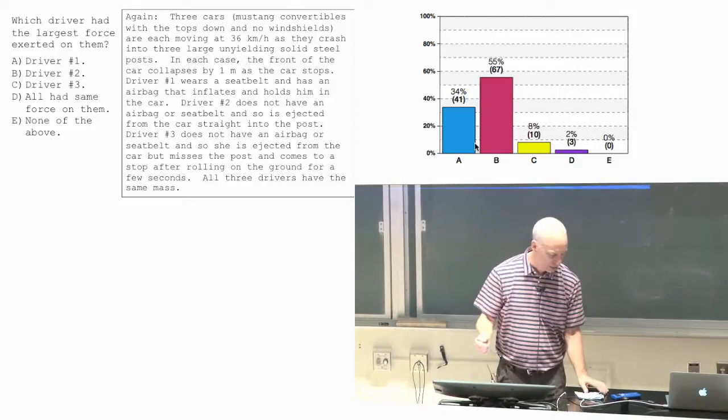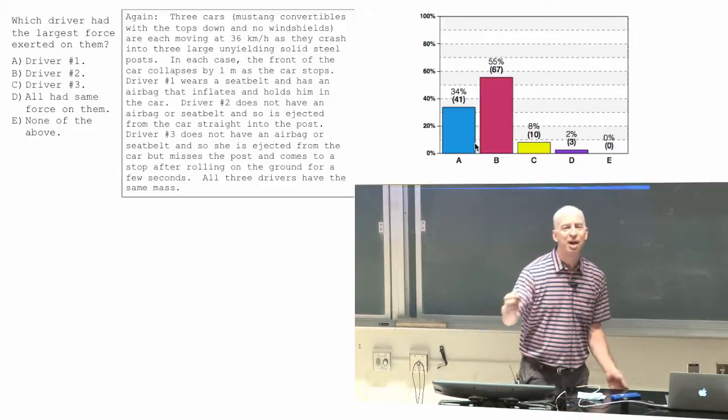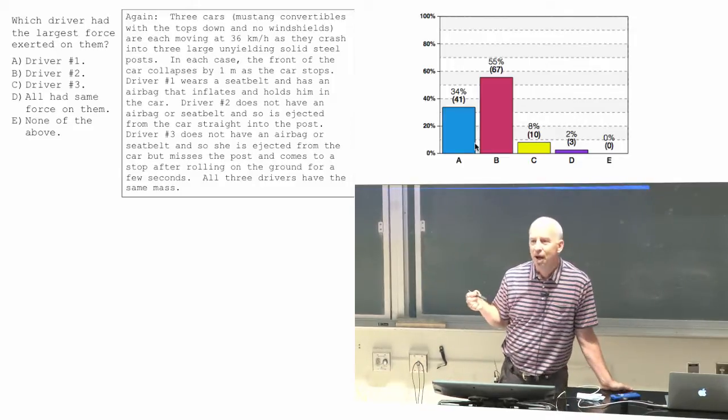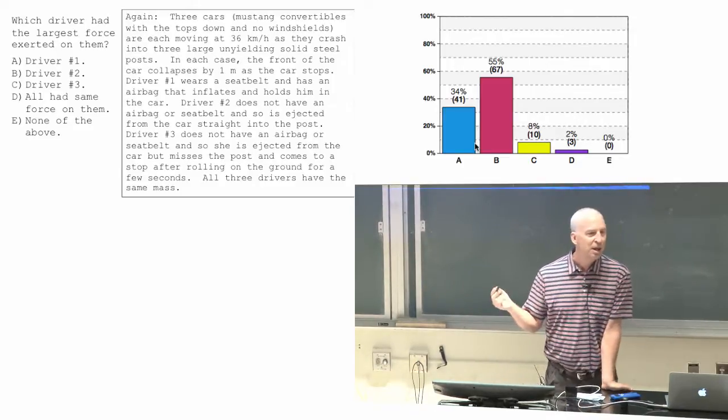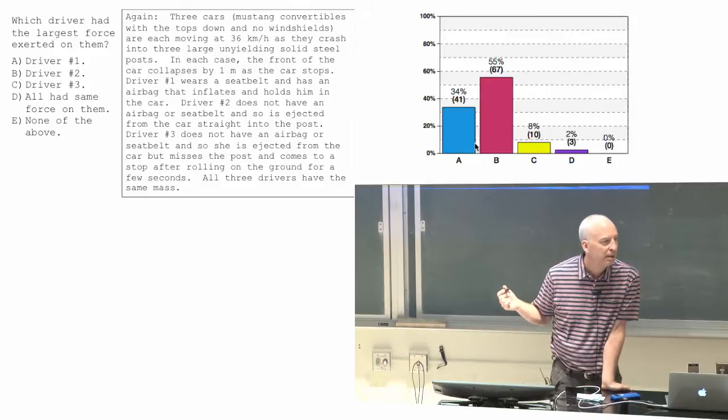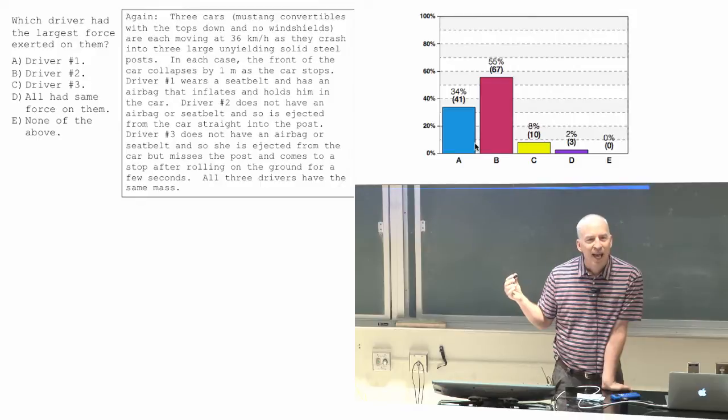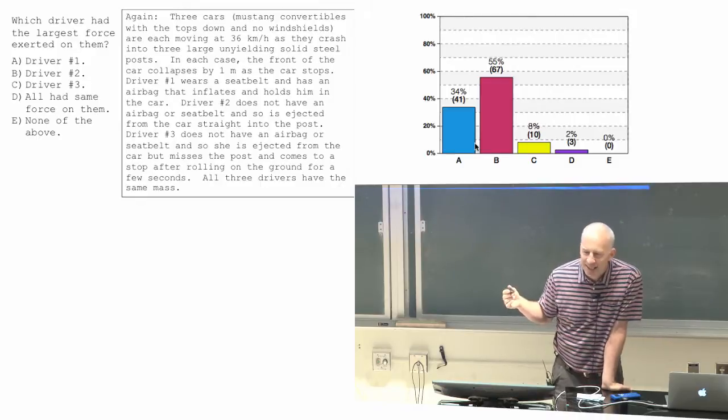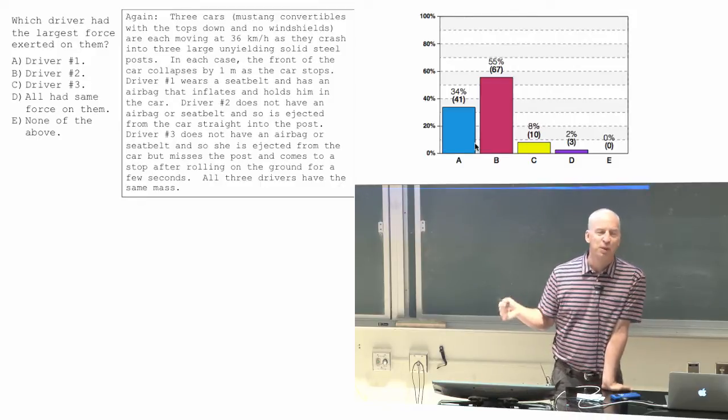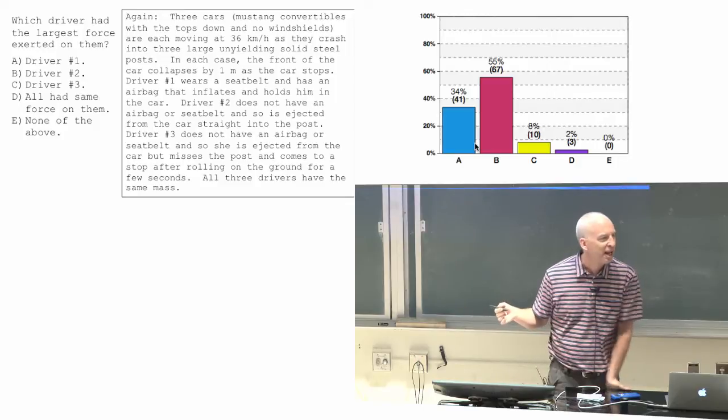Driver number one, driver number three, what about driver number three? Driver number three takes a really long time to come to a halt. So you might think, all right, that would be excellent. And you would be right, except there are issues with rolling on the ground at that kind of speed.